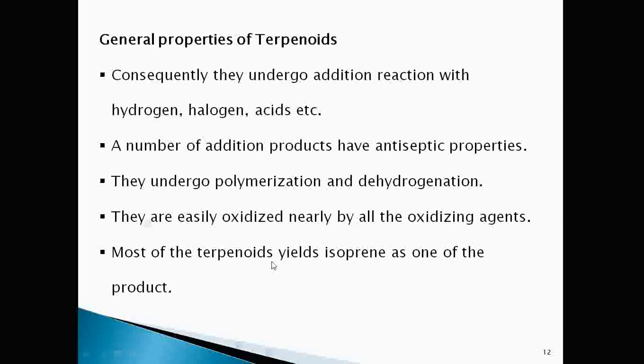They undergo addition reaction with hydrogen, halogen, acids etc. and these addition products have antiseptic properties. They also undergo polymerization and dehydrogenation. They easily oxidize with nearly all oxidizing agents and most of the terpenoids yield isoprene as one of their products.